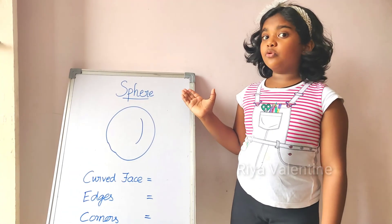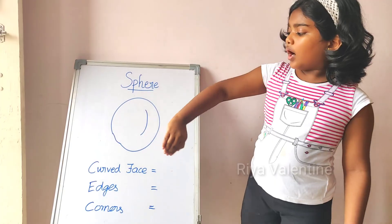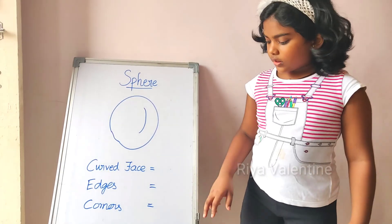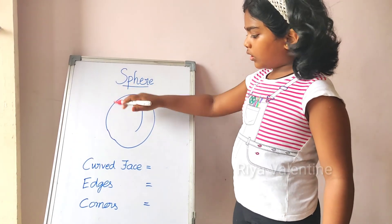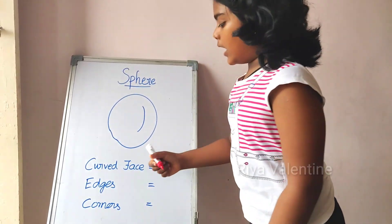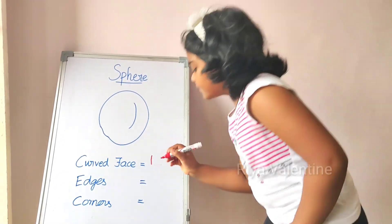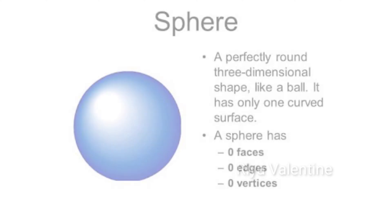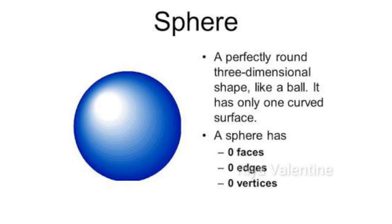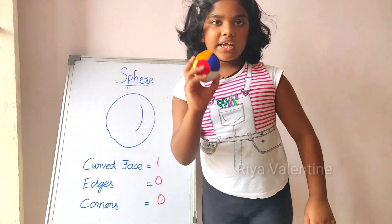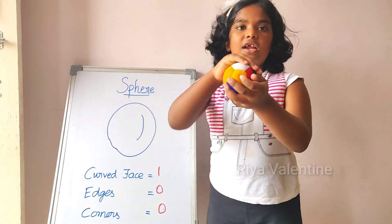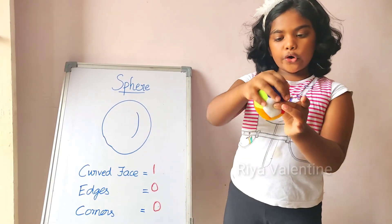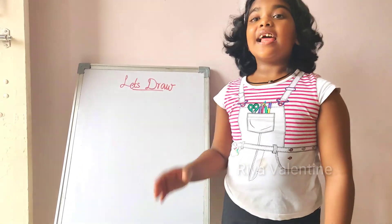So let's move on to the sphere. The sphere has one curved face, zero edges, and zero corners. One curved face, zero edges, and zero corners. Let's take a ball for example — one curved face, and no edges and no corners.